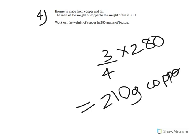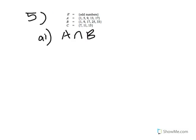Question 5 is about sets. The universal set is all odd numbers. Set A contains 1, 5, 9, 13, and 17. Set B and set C each have certain elements. Question 5A asks to list the members of A intersect B — the upside-down U means intersect, which means what they have in common. Looking at A and B, they share 1, 9, and 17.